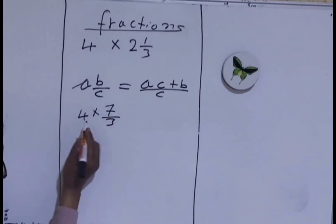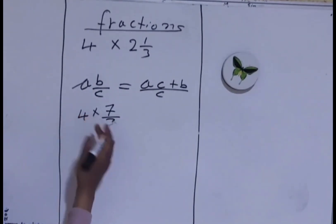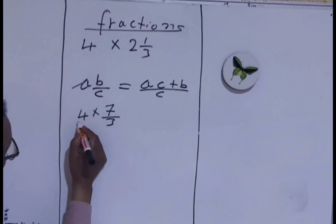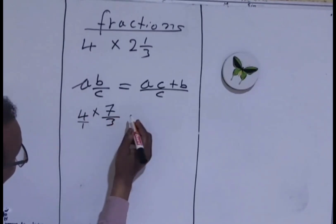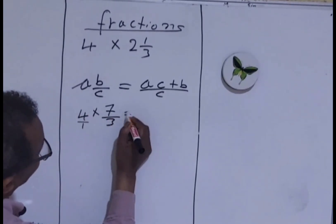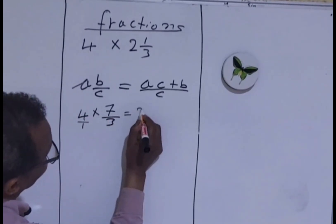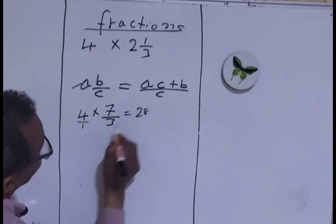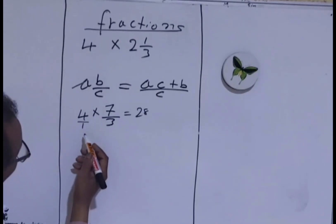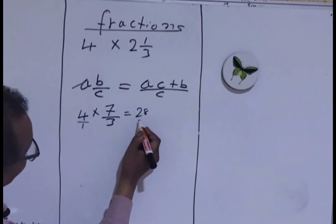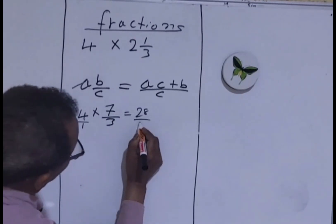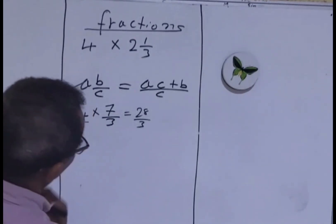4 is over 1, obviously — any whole number can be written over 1. So 4 times 7 is 28, and 1 times 3 is 3, giving us 28 over 3.